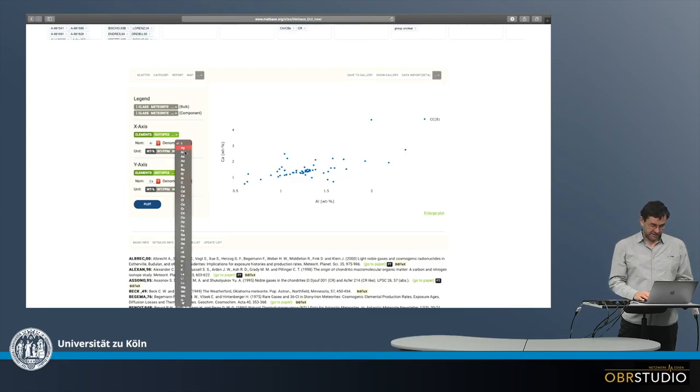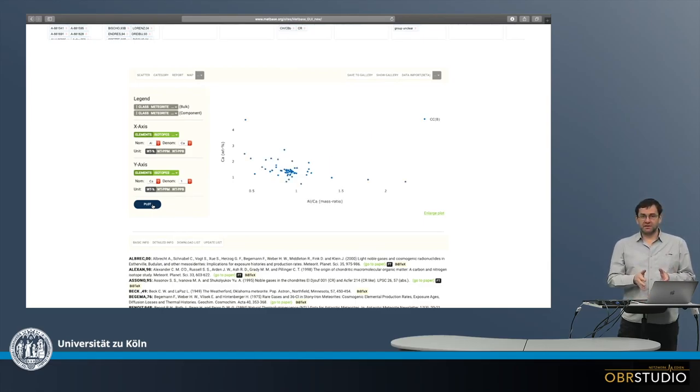I could also not only take aluminum on one axis, but also aluminum divided by, for example, calcium. And then I have created a different data set, which is now aluminum divided by calcium. But still, this is one single column of data that is plotted against a second column of data, which is in this case calcium.